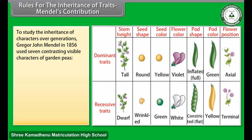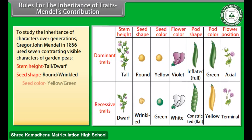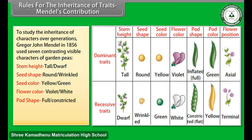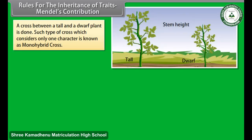To study the inheritance of characters over generations, Gregor John Mendel in 1856 used seven contrasting visible characters of garden peas: stem height (tall/dwarf), seed shape (round/wrinkled), seed color (yellow/green), flower color (violet/white), pod shape (full/constricted), pod color (green/yellow), and flower position (axial/terminal). A cross between a tall and a dwarf plant that considers only one character is known as a monohybrid cross.